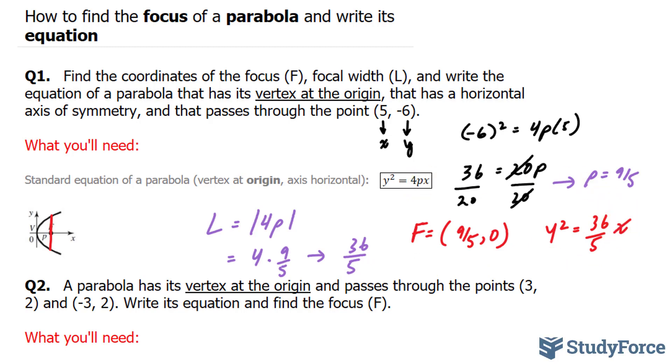Now, some teachers may not want you to have fractions. And to convert this fraction into an integer, we can multiply the whole equation by 5. If I multiply this whole equation by 5, I end up with 5y² = 36x.